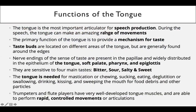The tongue is the most important articulator for speech production. An articulator is a group of muscles working together. During speech, the tongue can make an amazing range of movements which helps in producing different kinds of sounds and altering the shape of the tongue. The primary function of the tongue is also to provide a mechanism for taste.